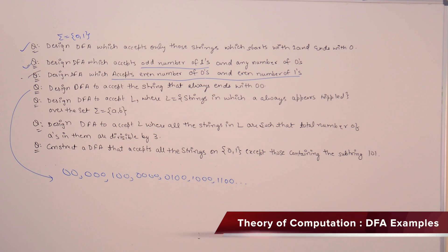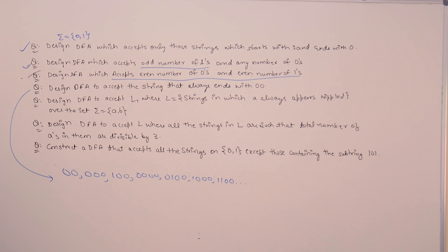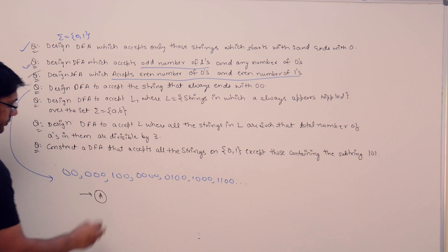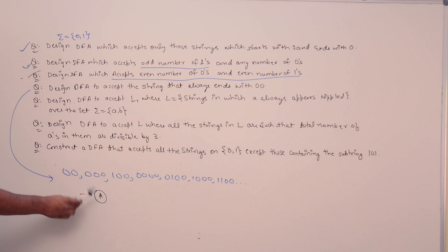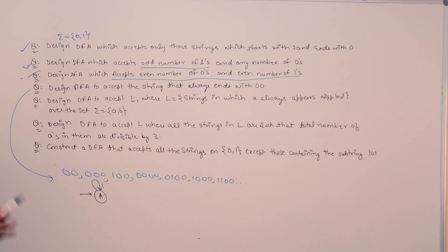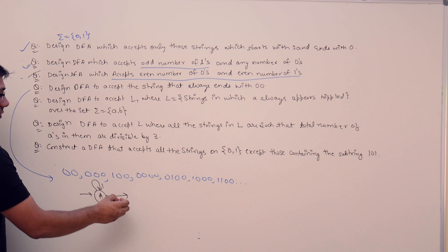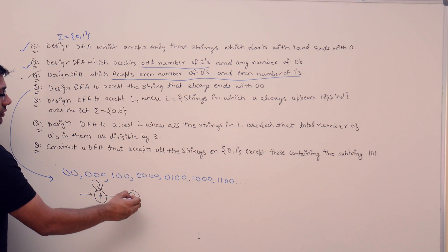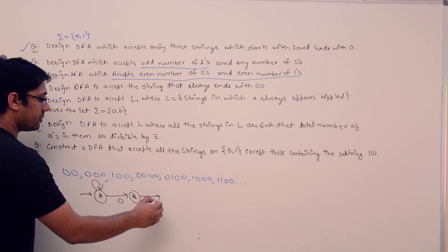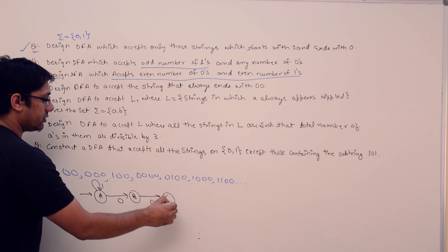Initially, we can have any symbol - 1 or 0. We are at state A, because the number of 0s and 1s are 0 here. We need to have at least two 0s. Whatever number of 1s we get, we are not counting 1s, only 0s. As soon as we get one 0, make a transition from state A to state B. Now the number of 0s is 1. As soon as we get one more 0, we make a transition from state B to state D.